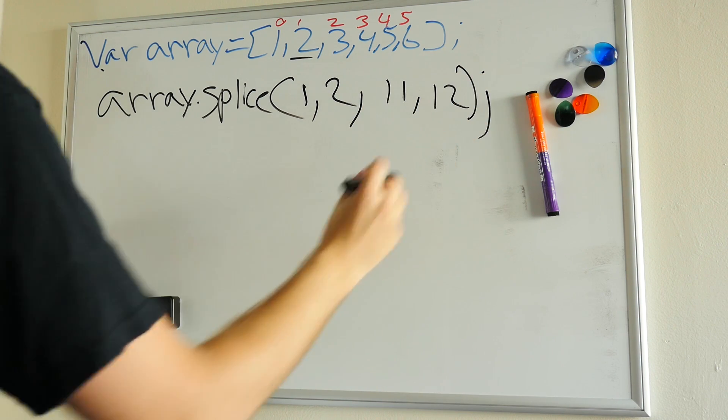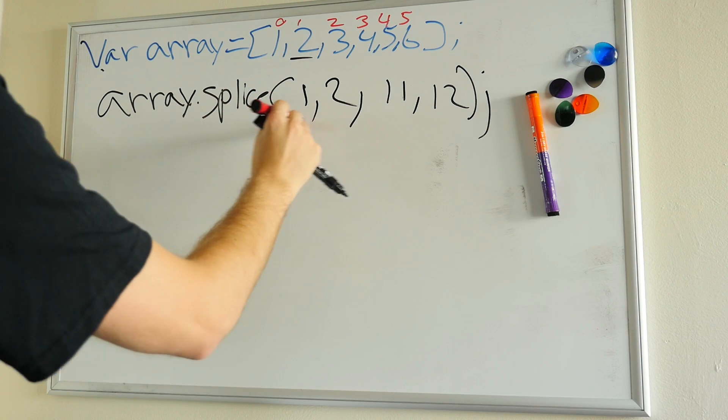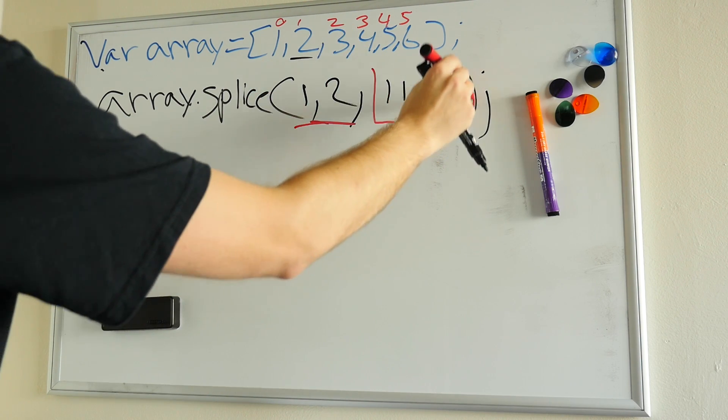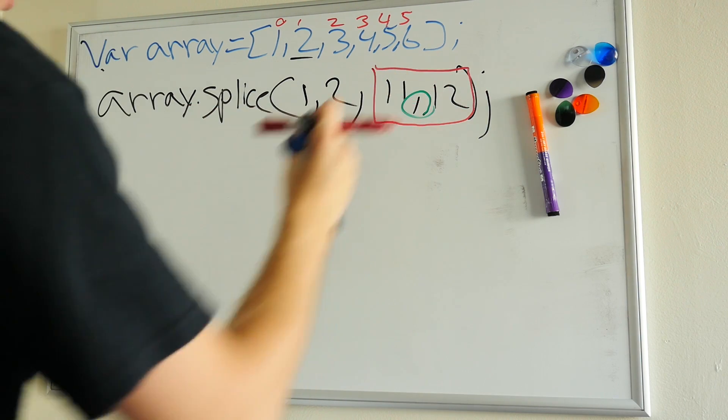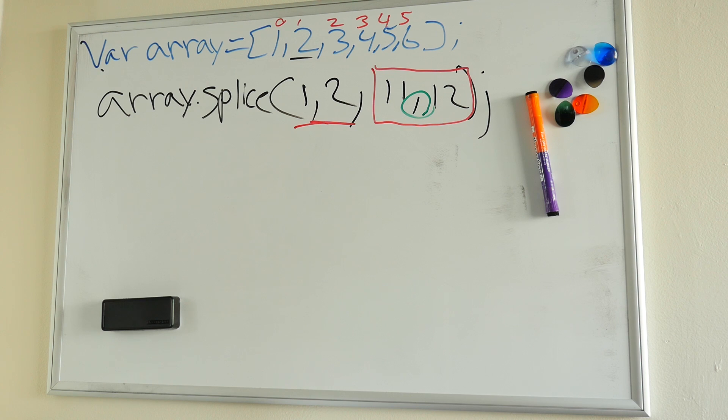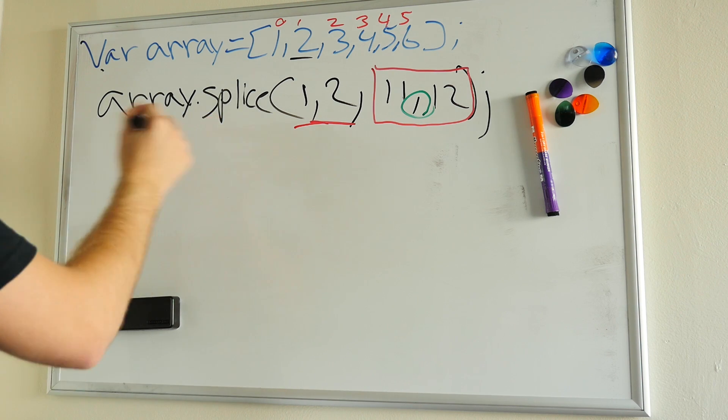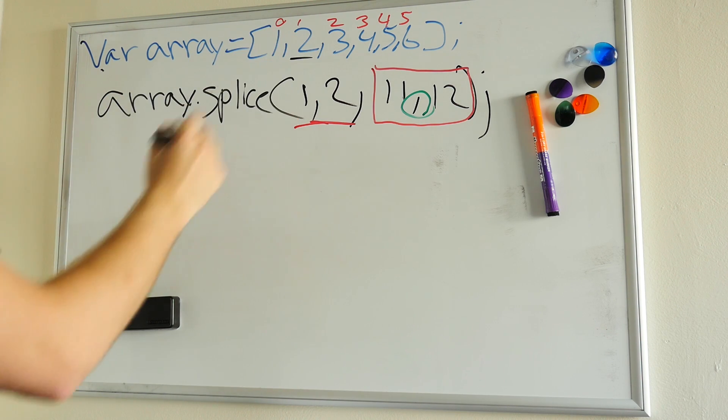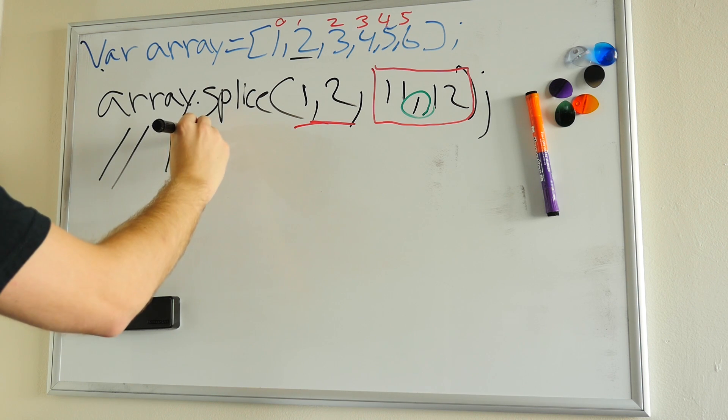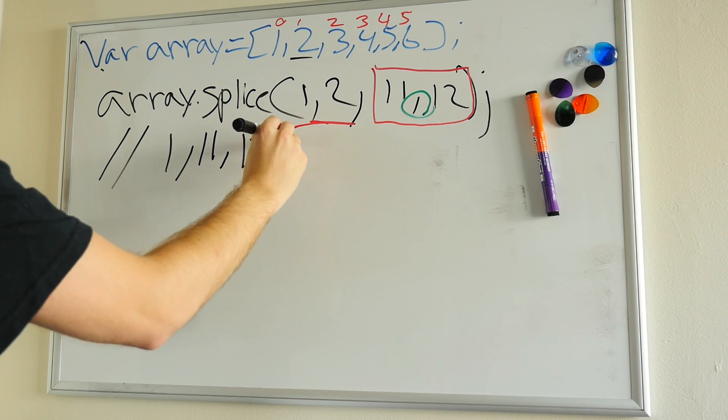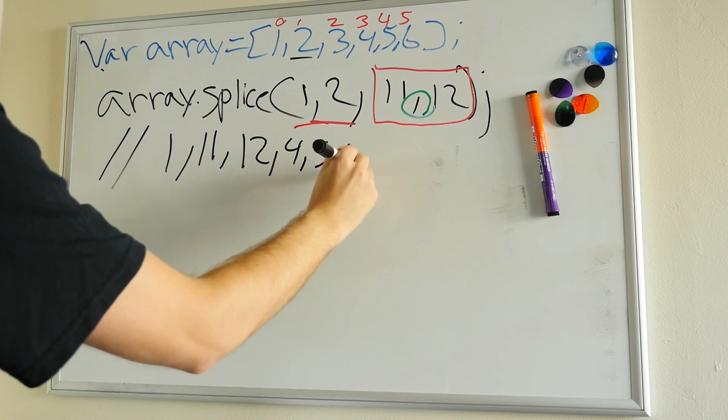So there are two required parameters here. And then from here on, our third parameter is optional. And the way we separate this is simply by putting a comma in our third parameter here. And this will let us know that we're looking to add multiple items. So in this case, we're going to go ahead and delete two and three. And our output would be 1, 11, 12, 4, 5, 6.